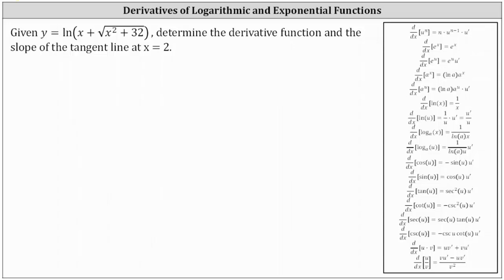We are given y equals natural log of the quantity x plus the square root of the quantity x squared plus 32. We're asked to determine the derivative function and the slope of the tangent line at x equals 2.